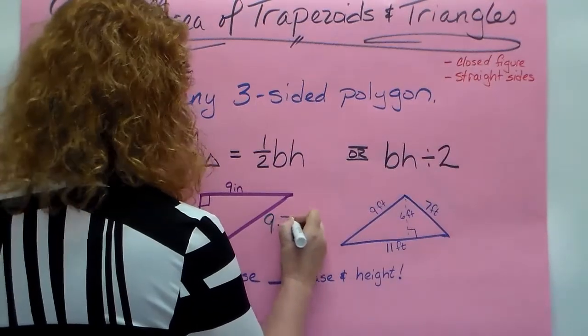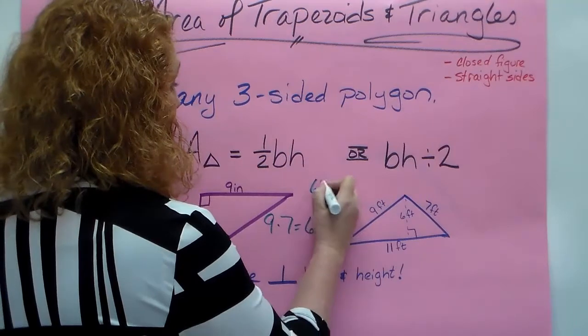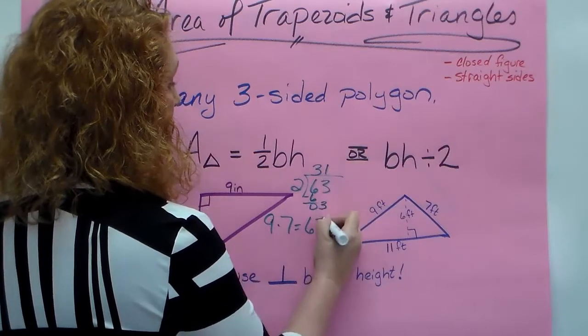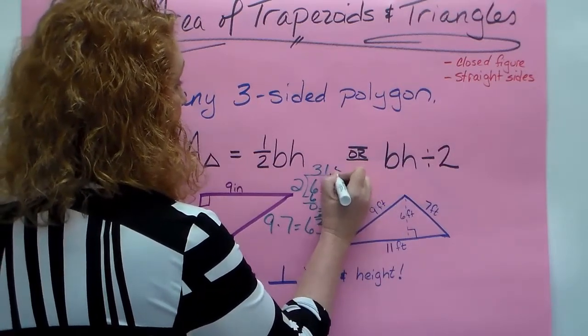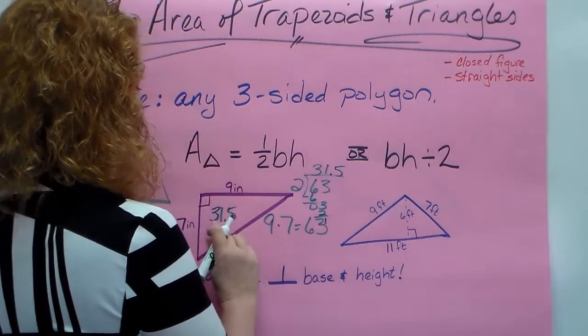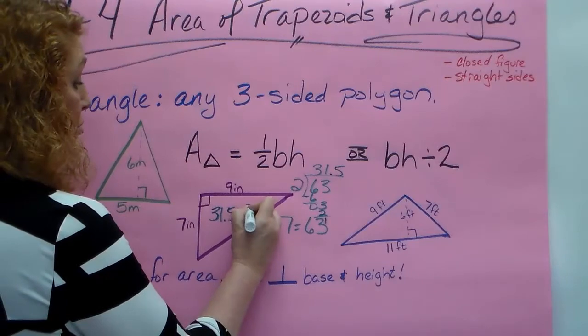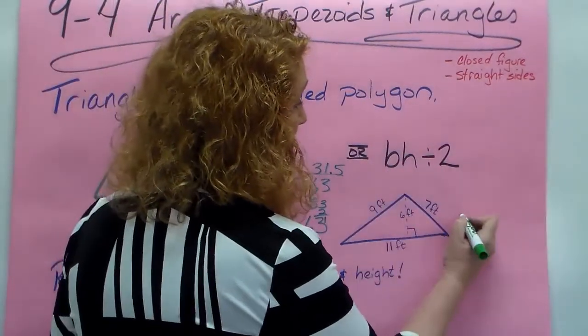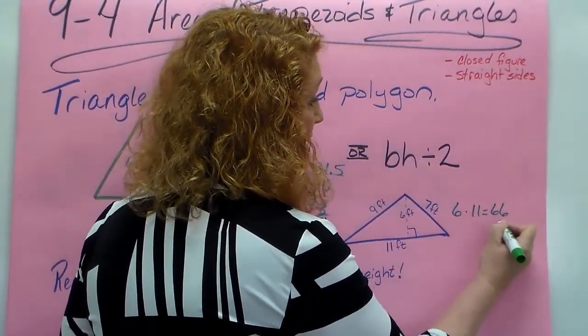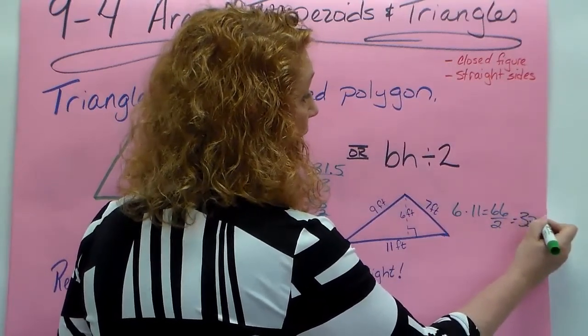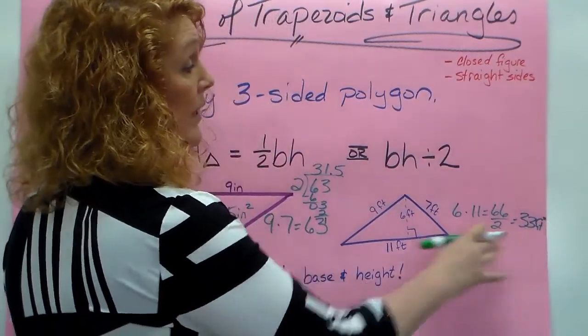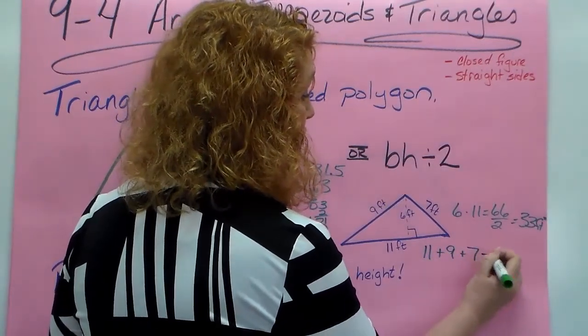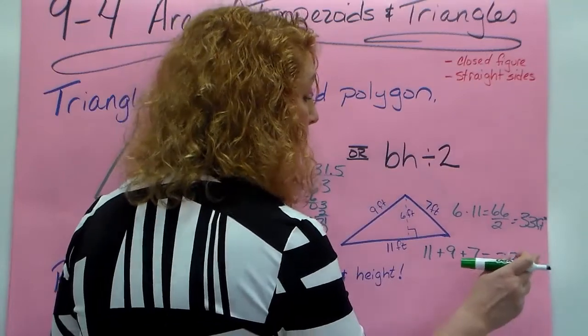So I'm going to do 9 times 7 which is 63, and then divide 63 by 2, so it's 31.5 or 31 and a half inches squared. Remember it's area so it's squared. This one, if I were to find the area I would do 6 times 11 which is 66 divided by 2 which is 33 feet squared. And if I were to find the perimeter it would be 11 plus 9 plus 7 which is 27 feet. Remember this is a linear distance so it's just feet, not feet squared.